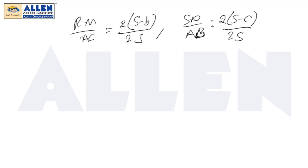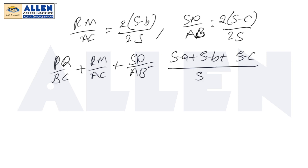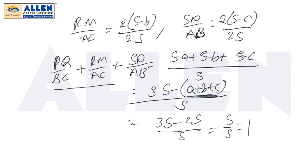Adding all these, we get PQ by BC plus RM by AC plus SN by AB equals S minus A plus S minus B plus S minus C by S, which equals three times S minus A plus B plus C by S. This equals three times S minus 2S by S, which equals S by S, equal to 1.